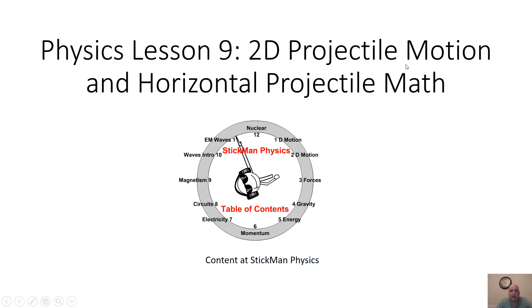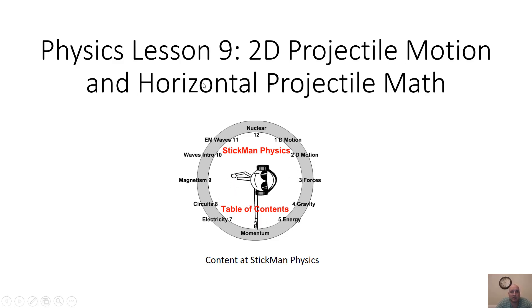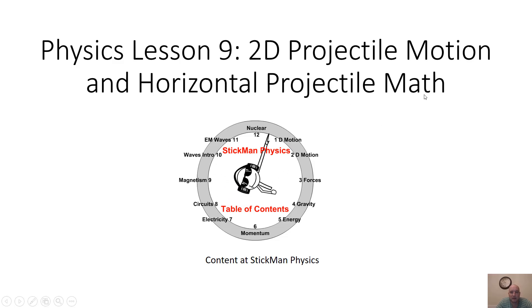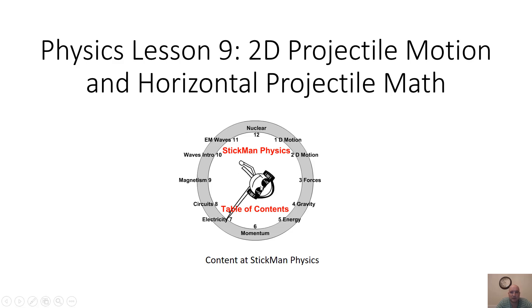This is our 9th physics lesson on 2D projectile motion and horizontal projectile motion math. We'll look at how to do something horizontally, how it would act, and how we can solve for different parts of that path.